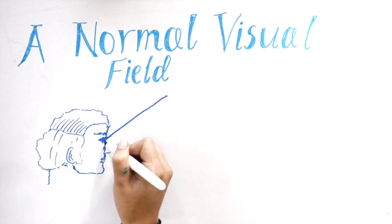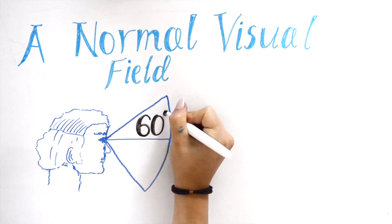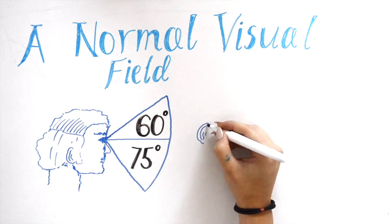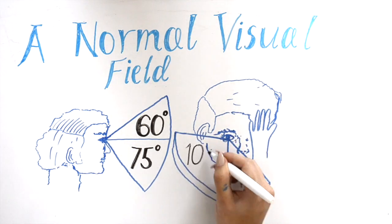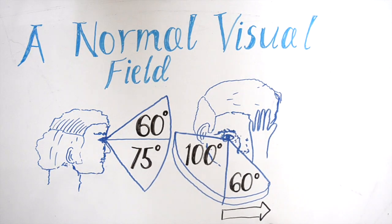In a normal healthy individual, the monocular visual field should extend approximately 60 degrees upwards, 75 degrees downwards, 60 degrees towards the nose, and 100 degrees out towards the ear.